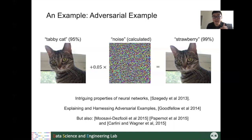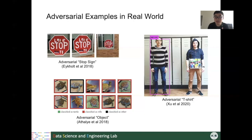Because this noise is carefully calculated, we call this synthesized image an adversarial example. And the more dangerous thing is that, instead of adversarial examples only happening in the digital environment, they can also appear in the real-world physical environment.